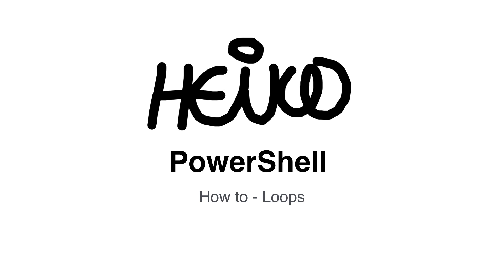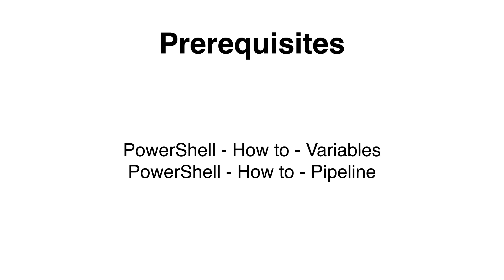Welcome. In this session, I would like to explain to you how to use loops in Windows PowerShell. Loops can be used to repeat a command for a large amount of data. Before I start the session, I need to make sure that you have a full understanding of variables and how to use the pipeline in Windows PowerShell. If you are unsure or you would like to refresh your memory, please visit my earlier sessions.